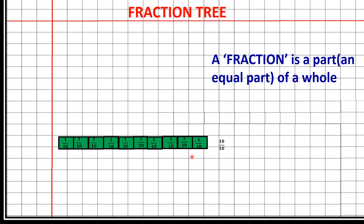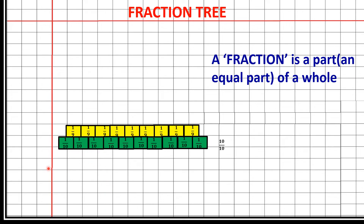Similarly, just above that, I have taken a different color. The complete whole is divided into 9 equal parts: 1, 2, 3, 4, 5, 6, 7, 8, 9. The whole is 9/9 and the fraction of each part is 1/9. Just above that, the whole is divided into 8 equal parts and the fraction of each part is 1/8.